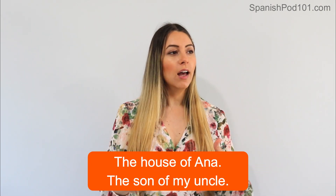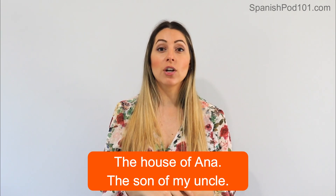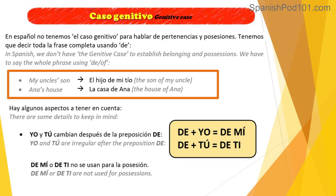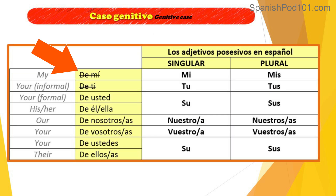When establishing possession in Spanish, think about the whole phrase — how would you say it in English the long way? 'The house of Ana' or 'the son of my uncle.' Also note that 'yo' and 'tú' are irregular after the preposition 'de.' 'De' plus 'yo' becomes 'de mí' — not 'de yo.' And 'de tú' becomes 'de ti' — not 'de tú.' However, 'de mí' and 'de ti' are not used for possessions; we use 'mi/mis' and 'tu/tus' instead.